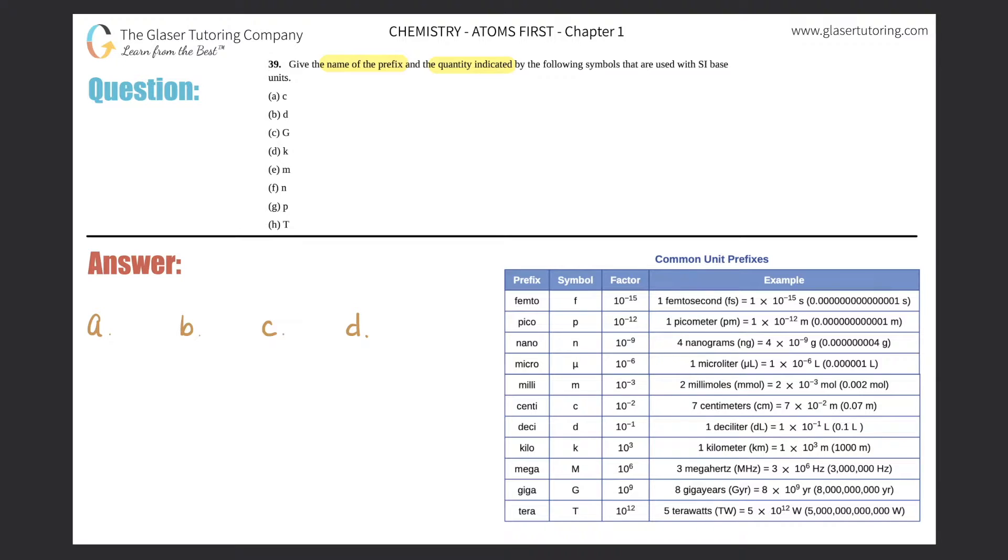Let's write out a through h: a, b, c, d, e, f, g, and h. Now let's get down to the question.